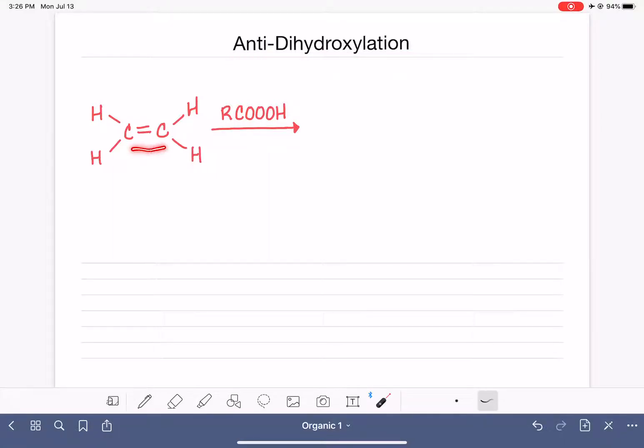Anti-dihydroxylation is an alkene addition reaction where we add two hydroxy groups to the carbons of the alkene and they add anti to each other, which means one is going to be pointing up and the other is going to be pointing down with respect to the original alkene. So let's start by drawing the product of this reaction.